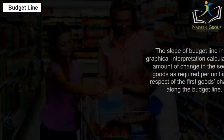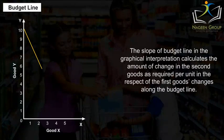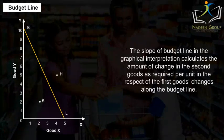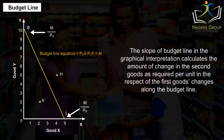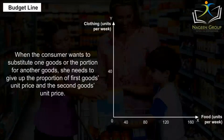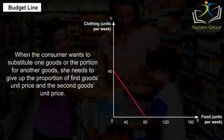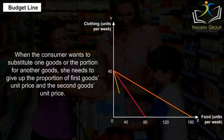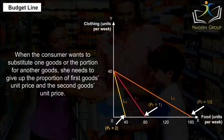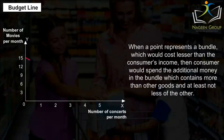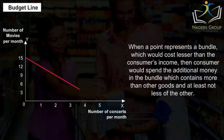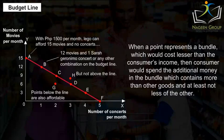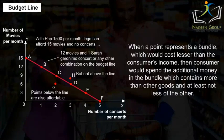Budget Line. The slope of the budget line in the graphical interpretation calculates the amount of change in the second goods as required per unit in respect of the first goods' changes along the budget line. When the consumer wants to substitute one good or a portion for another, she needs to give up the proportion of the first good's unit price relative to the second good's unit price. When a point represents a bundle which would cost less than the consumer's income, the consumer would spend the additional money on a bundle which contains more of one good and at least no less of the other.